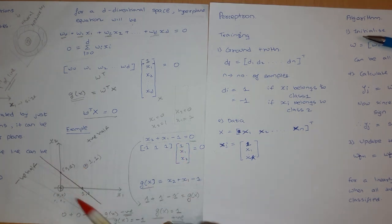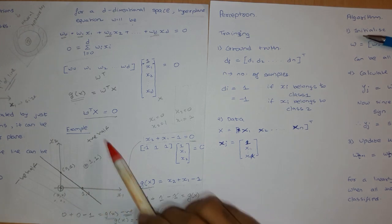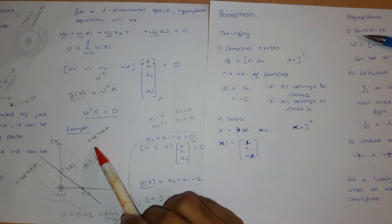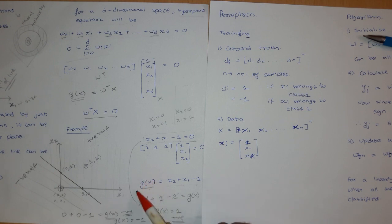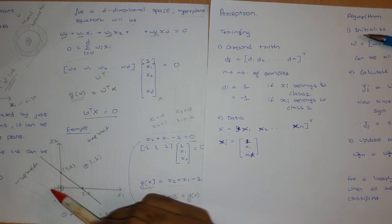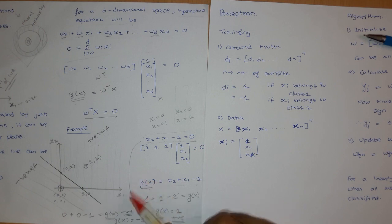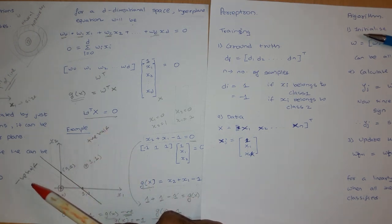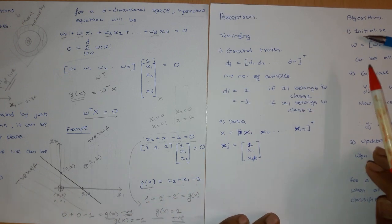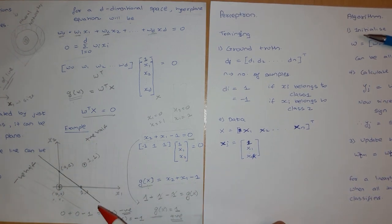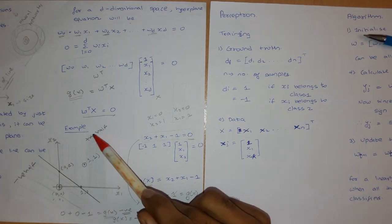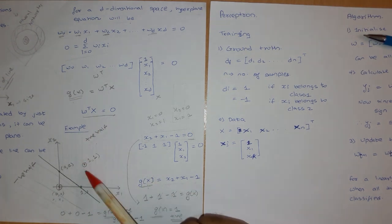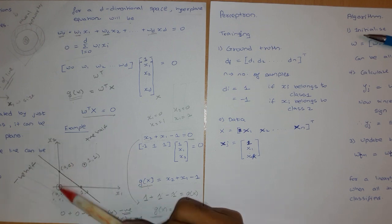Every such line has a positive half where any value of x1, x2 will give a positive value of g of x, and any value x1, x2 on the other side will give a negative value of g of x. This region is called the positive half of the line and this region is called the negative half. We exploit this property by placing one class in the positive half and the other class in the negative half.